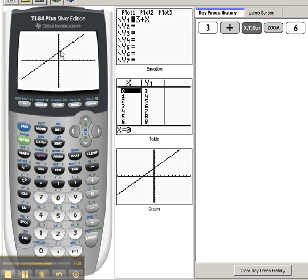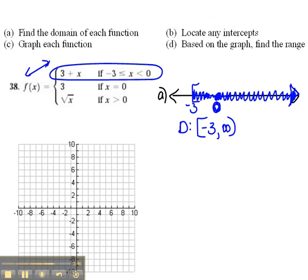Now, because of that restriction in the domain, it said that we're only going to use the x's between negative 3 and 0. So negative 3, oops, where did my graph go there? Lost it. Let me get it right back here.